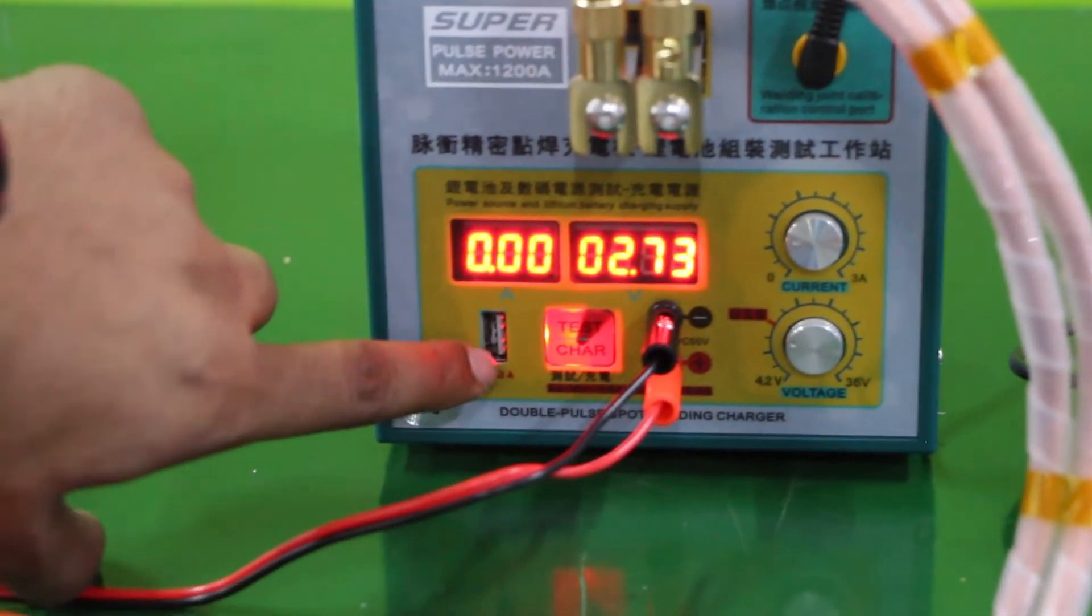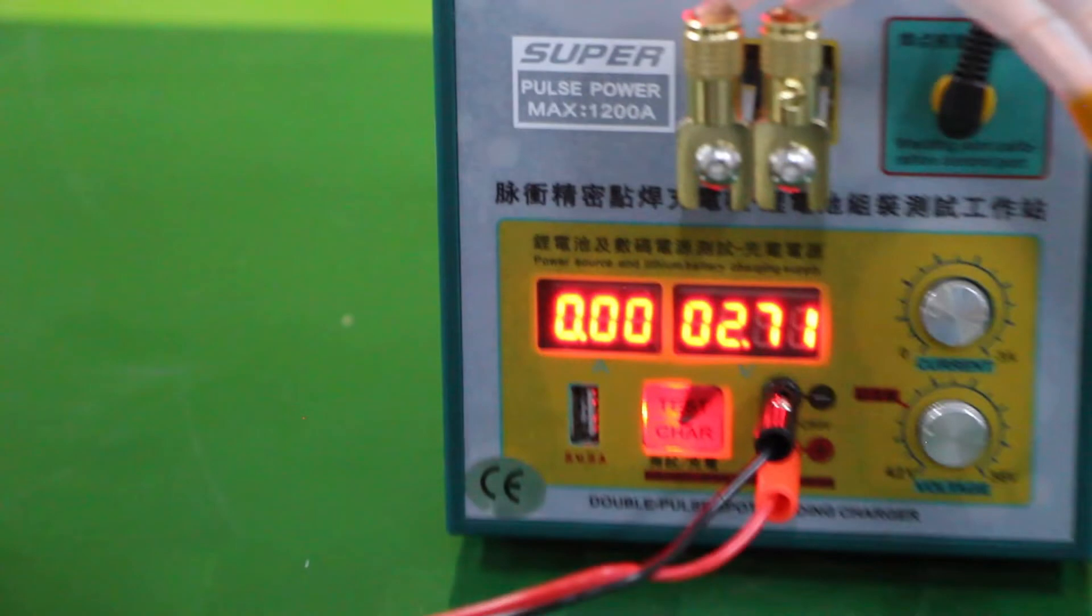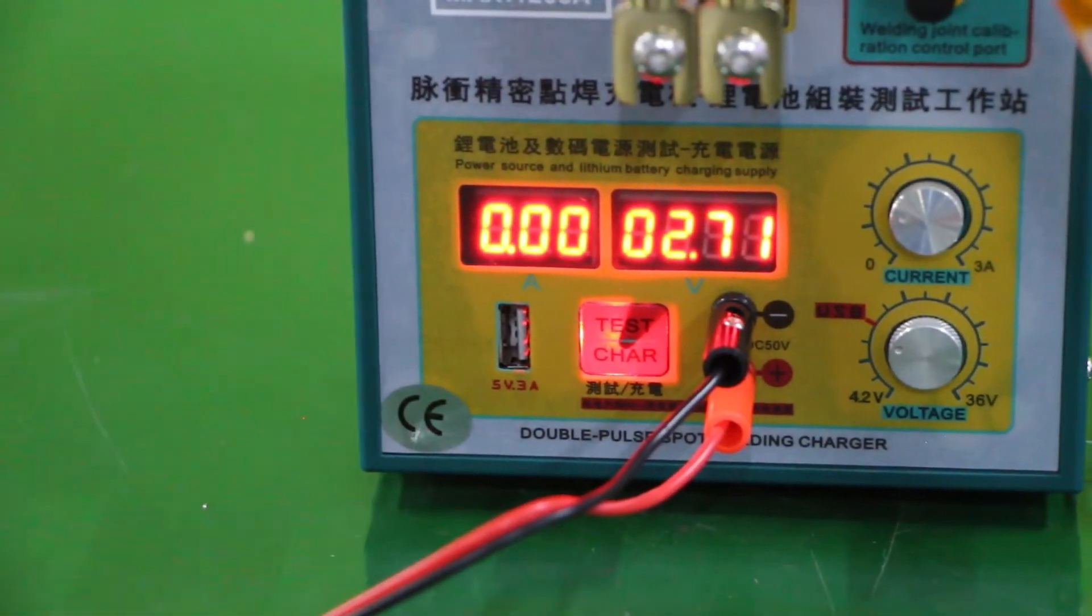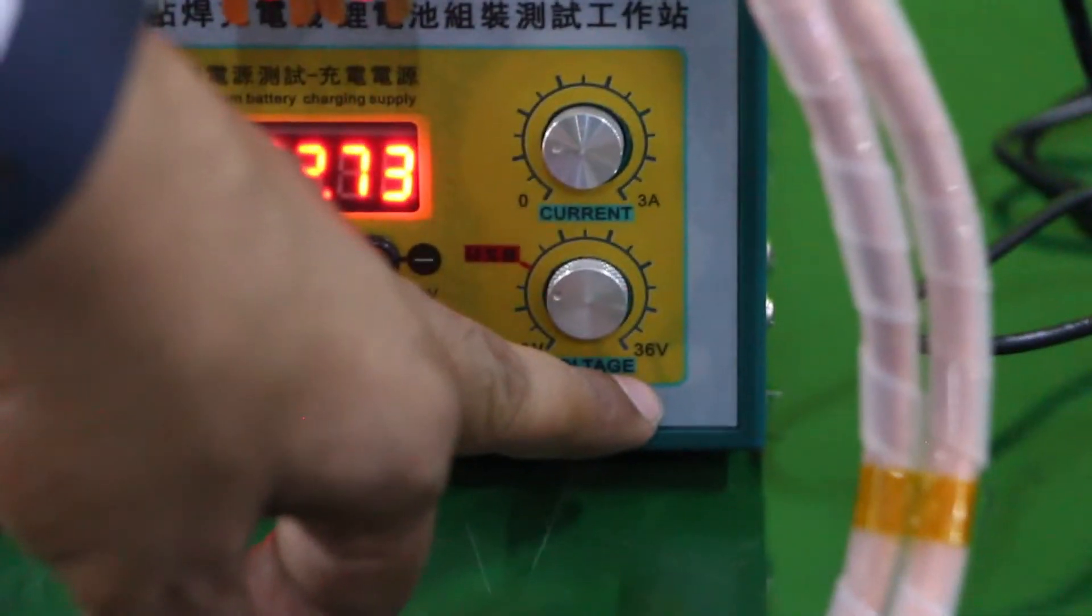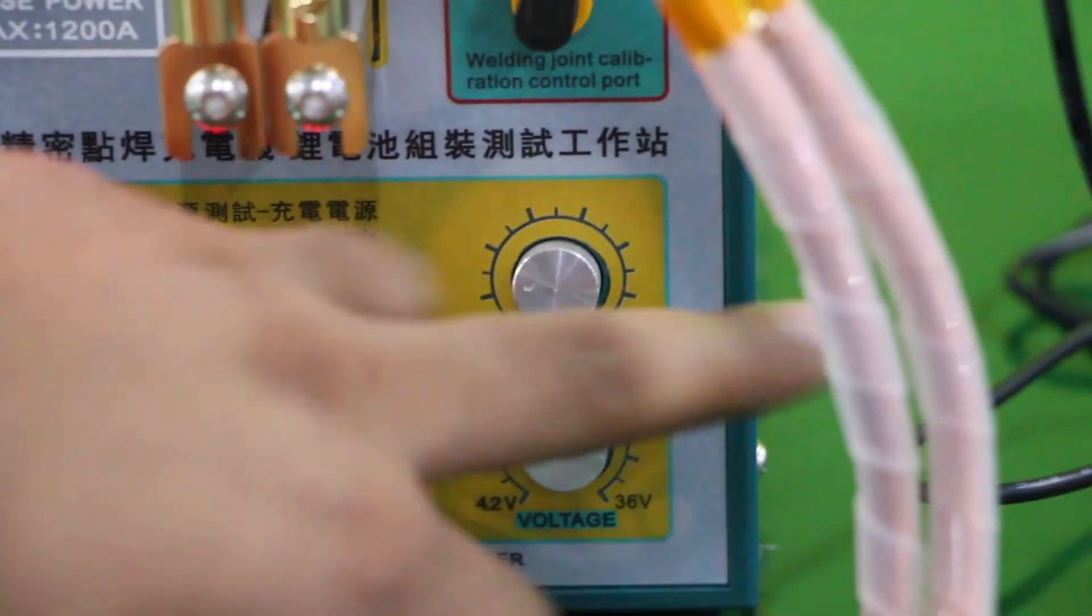From this port we can charge our battery through USB, and from these two cables, plus and minus, we can charge our cell or battery from 4.2 volt DC to 36 volt DC with 3 ampere current maximum load.